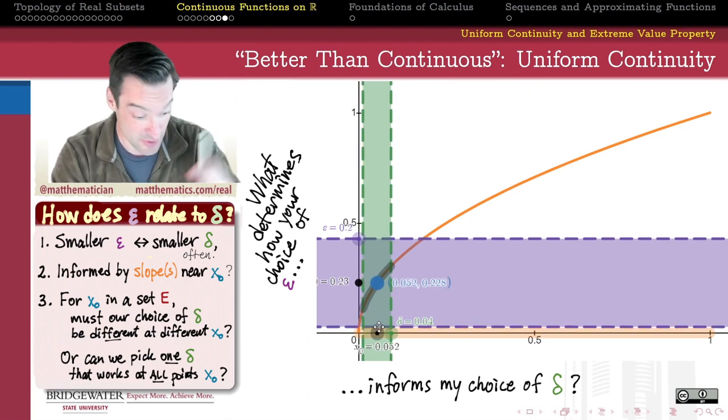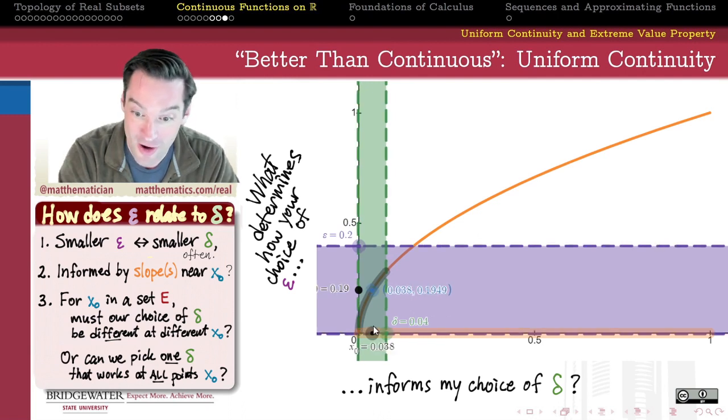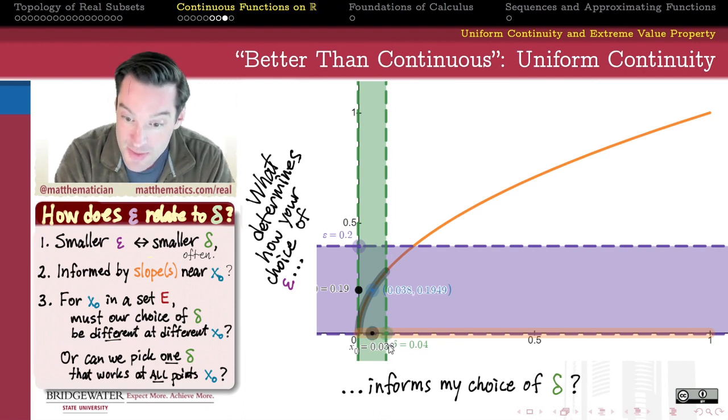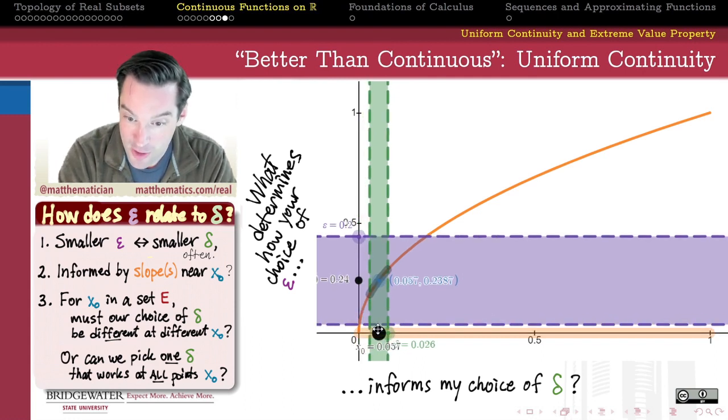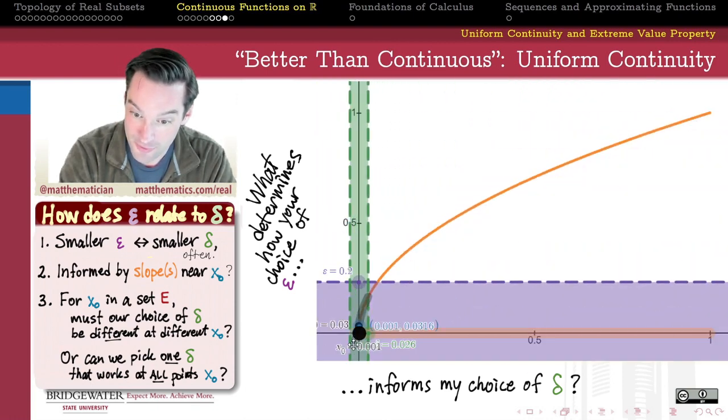But then the closer that we get towards this place over here, as the slopes of the square root function do end up sort of approaching infinity as we approach this vertex here at the origin. But it still seems like my purple strip is sort of moving fast enough along with my green strip here that this choice of delta still seems to work. I could still, of course, in principle, choose a smaller value for delta.